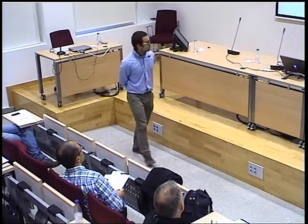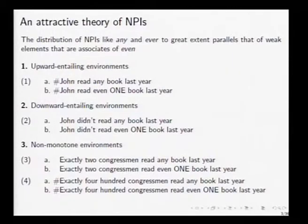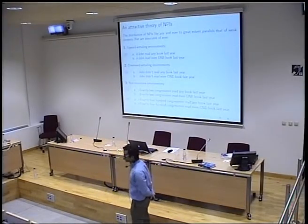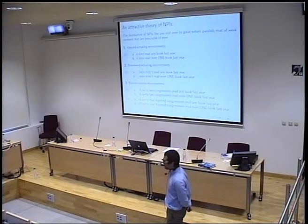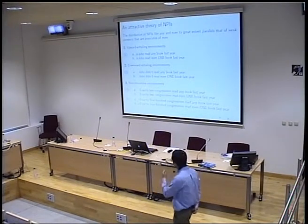In non-monotone environments, we again have parallelism between NPIs and 'even one' expressions. However, this time around, the distribution is context-dependent for both. So 'exactly two congressmen read any book last year' is okay, but also 'exactly two congressmen read even one book last year' is okay. If we tinker with the sentence or context, the sentences become unacceptable: 'exactly 400 congressmen read any book last year' and 'exactly 400 congressmen read even one book last year' are both marked.